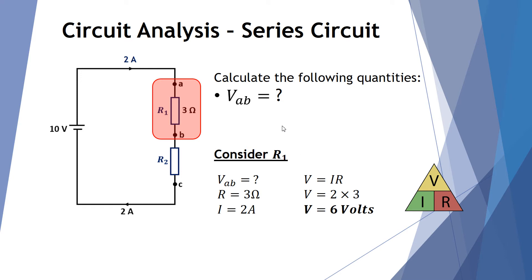Now let's work out the voltage between points A and B — the voltage across resistor 1. We're going to use Ohm's Law, V equals IR, and look at all the information we have about resistor 1. The voltage between points A and B is our question mark. The resistance is given as 3 ohms, and we know 2 amps is moving through the circuit at all points. So using V equals IR, where I is 2 amps and R is 3 ohms, the voltage between points A and B — across resistor 1 — is 6 volts. 2 times 3 is 6.